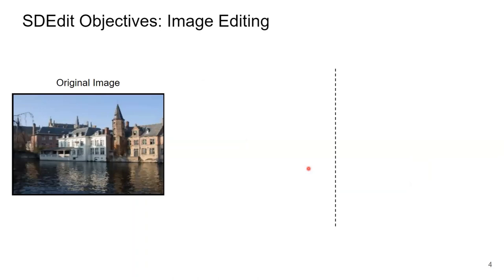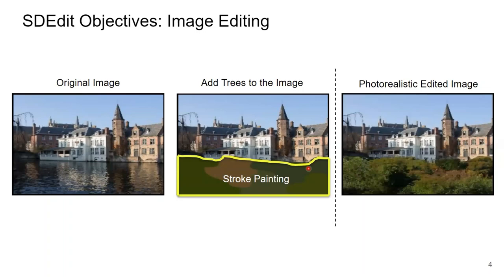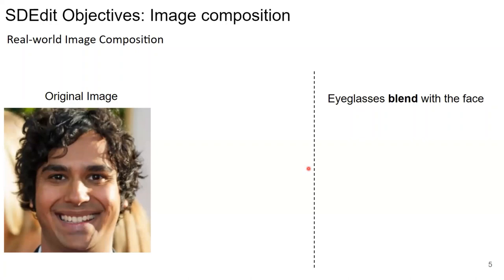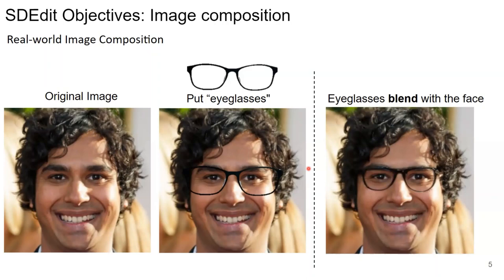The second objective of SDEdit is image editing. For example, if we have an image with a sea and we want to replace the sea with trees, we can add a stroke painting on top of the sea to generate realistic images of trees. The third objective is image composition — for example, putting glasses on a face while blending them with the hair. Mohamed will explain more about how SDEdit generates photorealistic images.